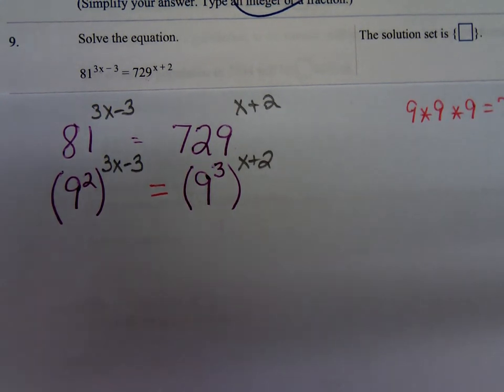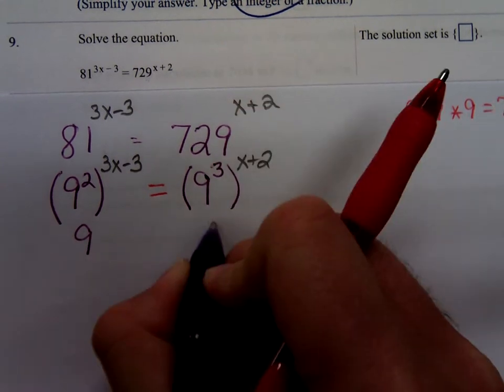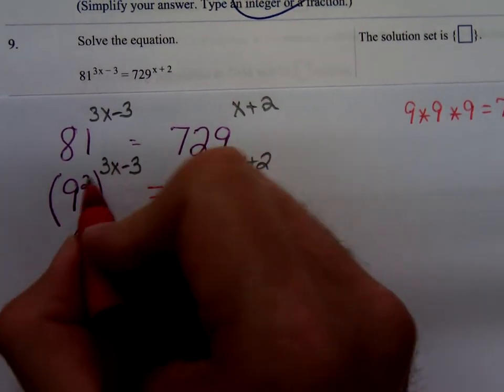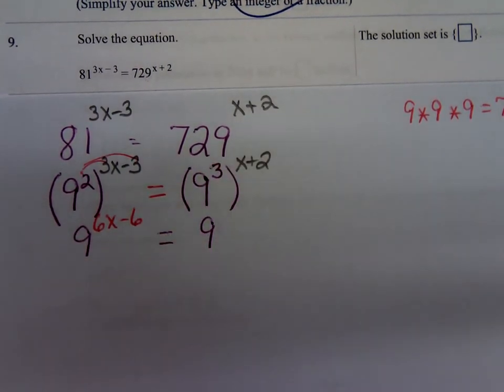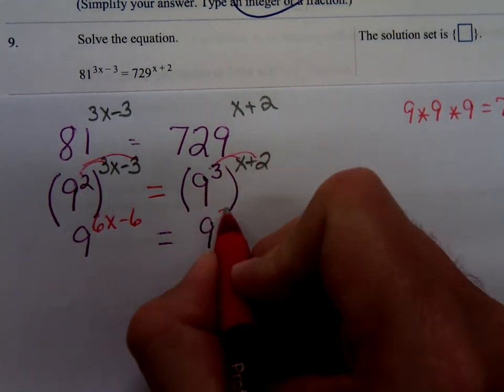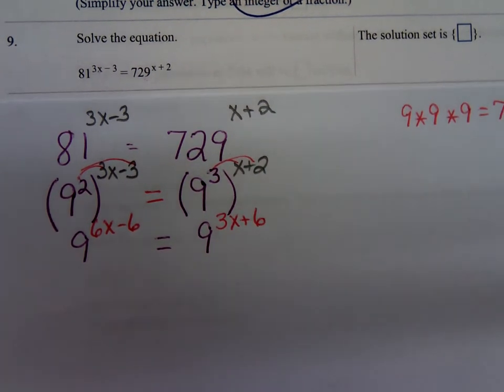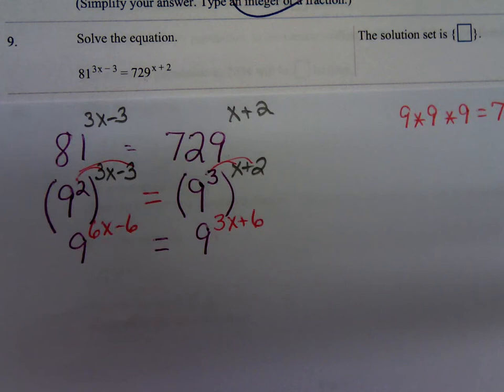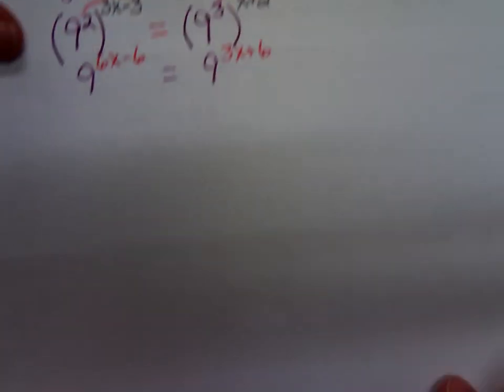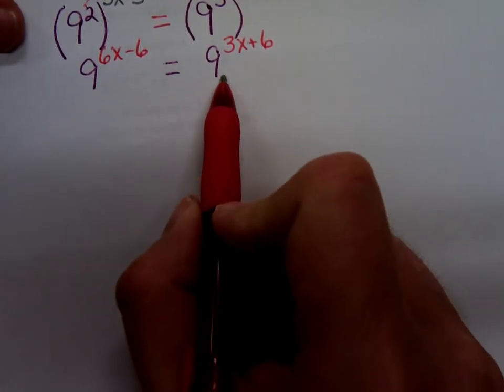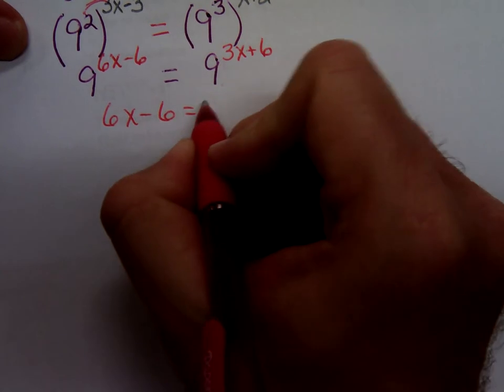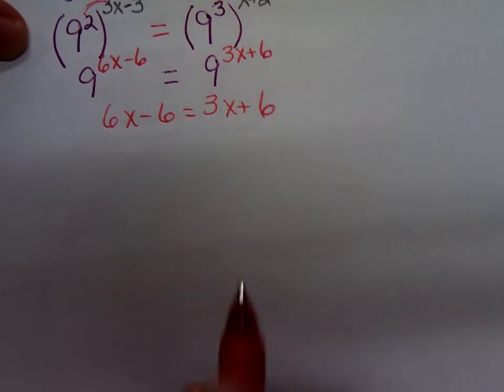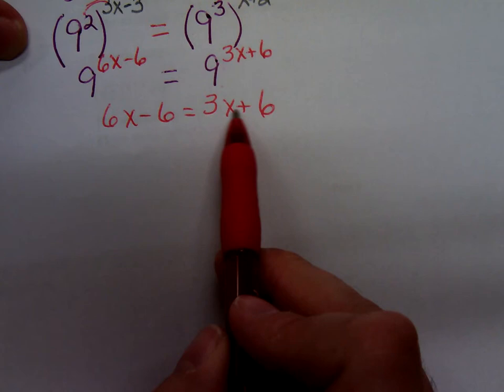Now, let's write this without the parentheses. We've got to distribute. So, the exponent on the left is 6x minus 6. The exponent on the right is 3x plus 6. And now, if the bases are equal, the exponents have to be equal. So, I'm just dropping the 9's and solving 6x minus 6 equals 3x plus 6.